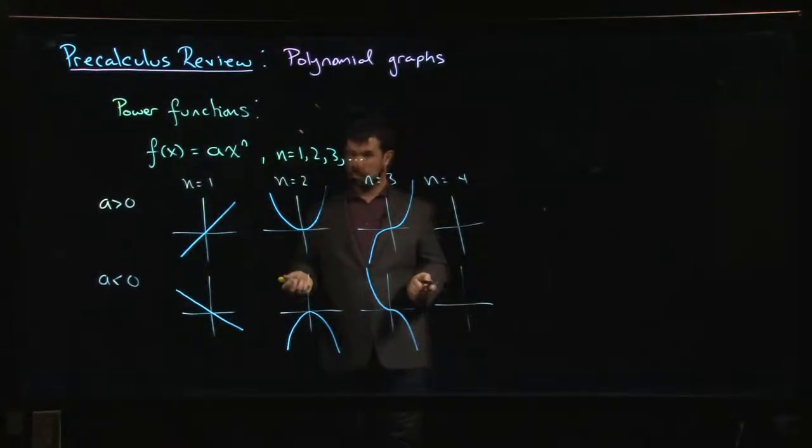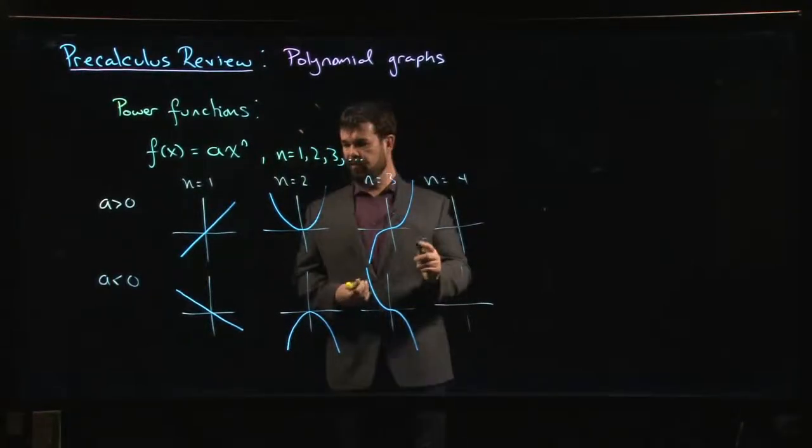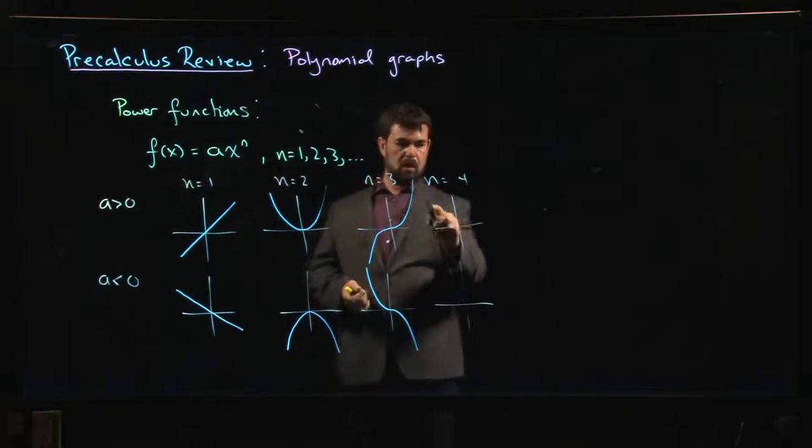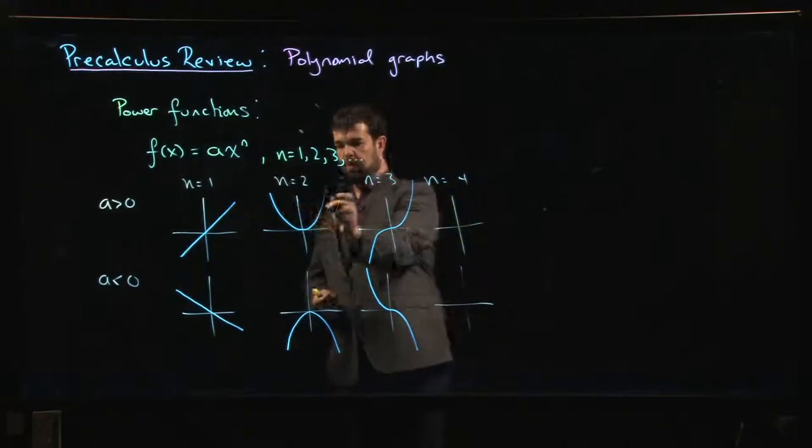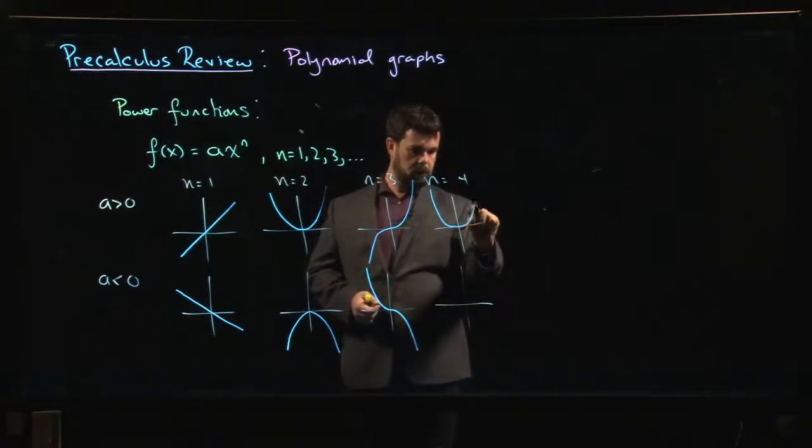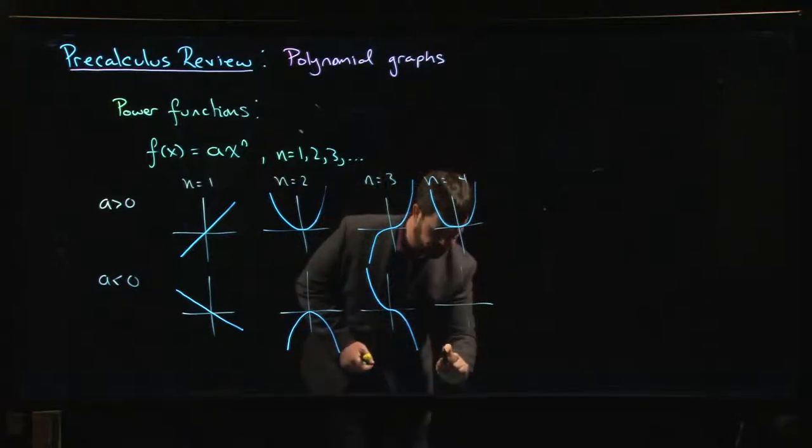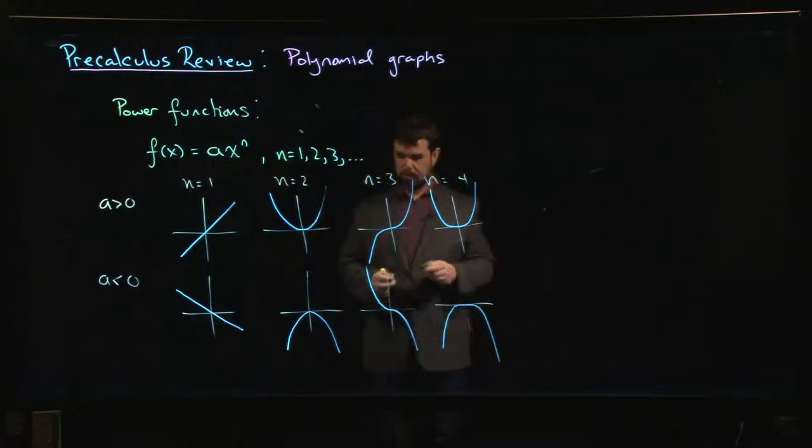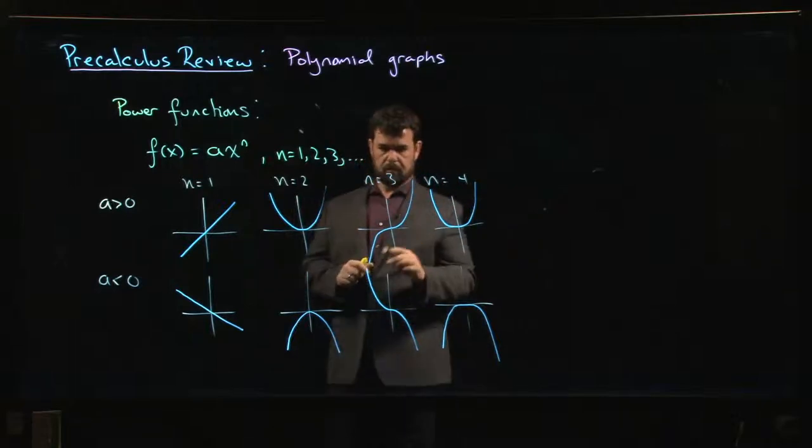Cubics are going to look like that. Degree 4 looks a lot like degree 2, it's just going to be a little bit steeper on the edges, a little bit flatter on the bottom. We get something that kind of looks like this, something like that for degree 4.